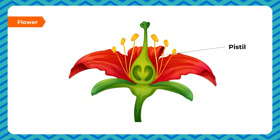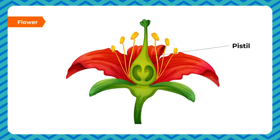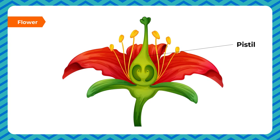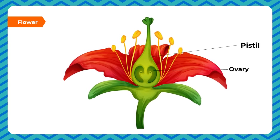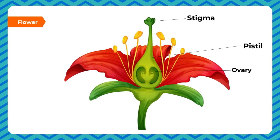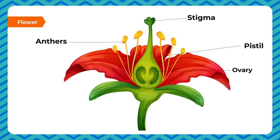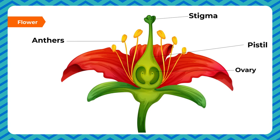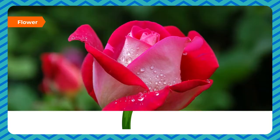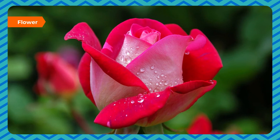The pistil or carpel is a flask-shaped structure rising from the center of the flower and is the female part. The ovary is its slightly swollen base, the style is the short tube-like upper part, and above it is the stigma, which receives pollen grains from the anthers. Ovules are small bead-like structures inside the ovary. In some flowers, sepals and petals are exactly alike; some flowers may not have stamens, and some may not have carpels.